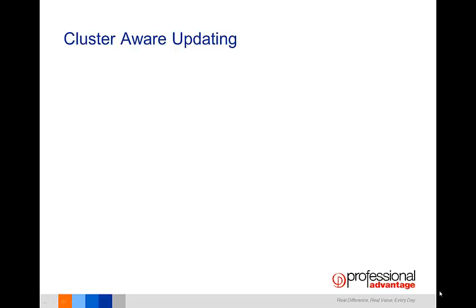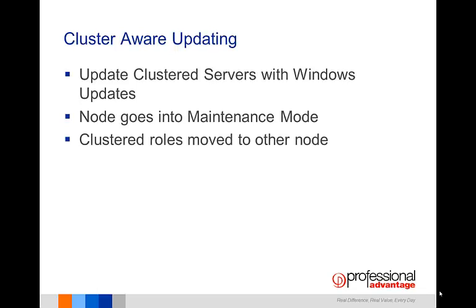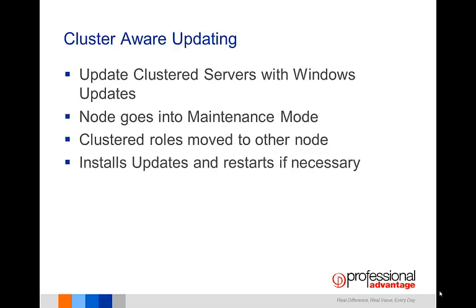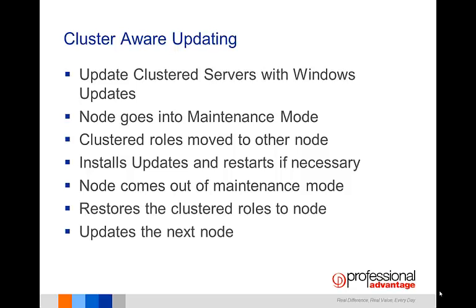Cluster Aware Updating is an automated feature that allows you to update all servers in a cluster with Windows updates with no manual intervention and with little or no loss in availability. During an updating run, Cluster Aware Updating will automatically put each node into maintenance mode, move clustered roles off to another server, install Windows updates and any dependent updates, perform a restart if necessary, and then bring the node out of maintenance mode and restore the clustered roles before moving on to the next node. With Hyper-V and live migration, Cluster Aware Updating can coordinate cluster updates with no impact to service availability.